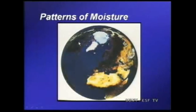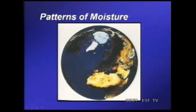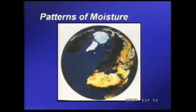Here are the patterns of moisture we can see on the globe. These follow temperature gradients. We have ice here, more rainy areas, desert regions — and you see that latitudinal pattern again, following Hadley cells and other convection currents.